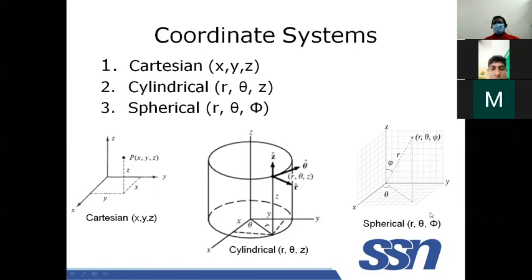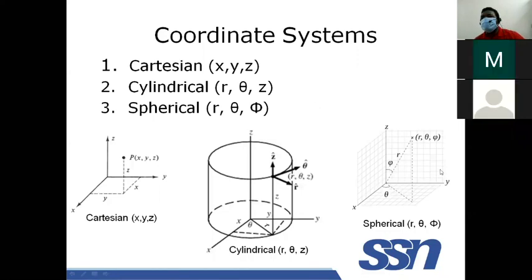In the spherical coordinate system, a point is defined by the radius R, angle theta, and angle phi — the inclination from another reference axis. By defining R, theta, and phi, you can locate any point within a spherical coordinate system.